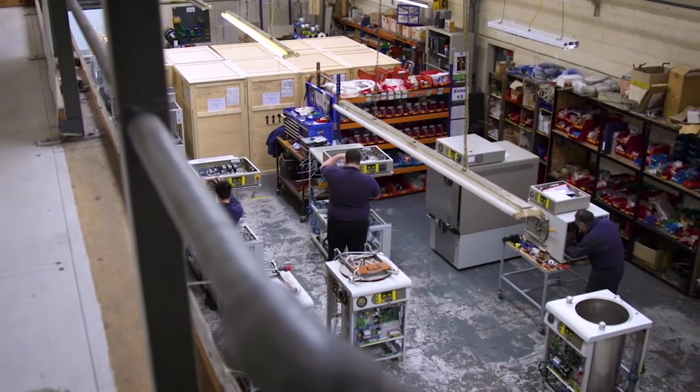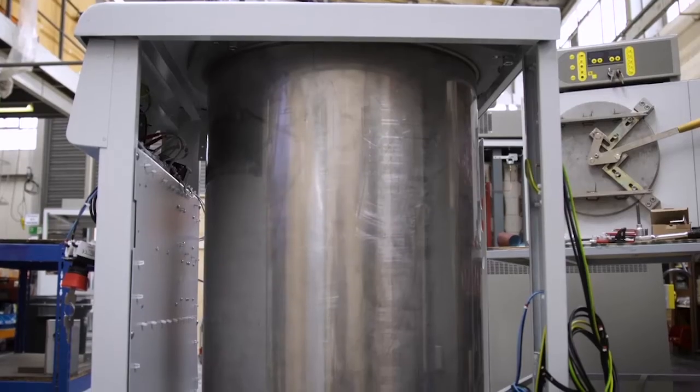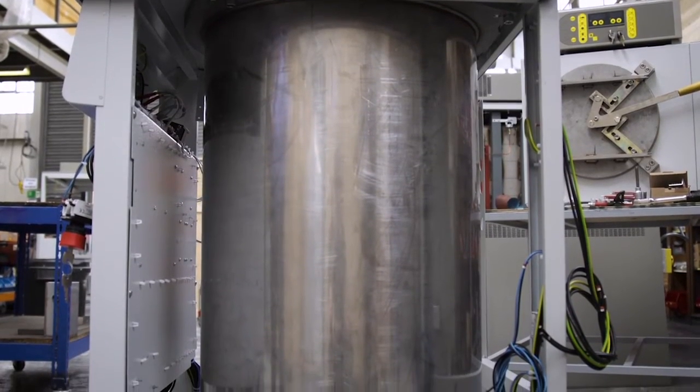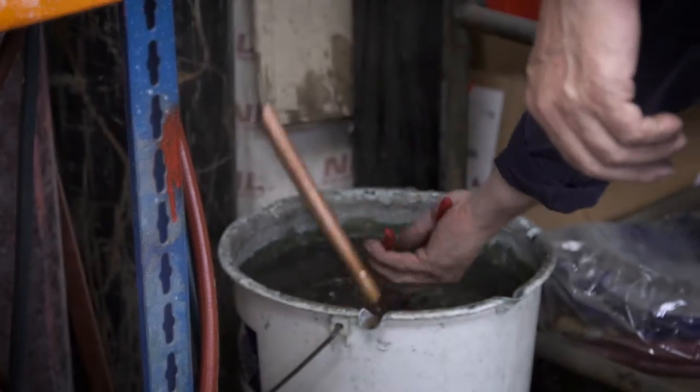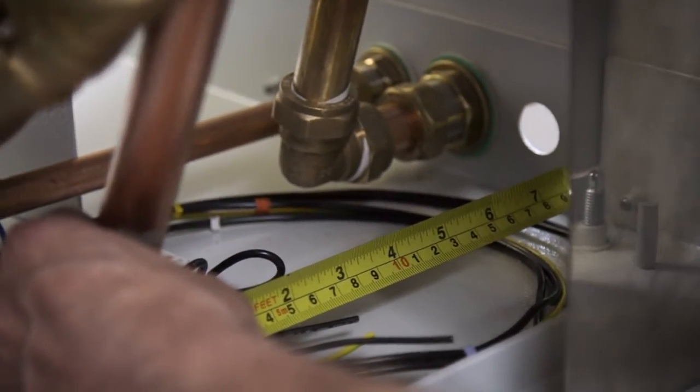All components come together in the building test area. First, the pressure vessel is carefully mounted and secured in its frame. Next, all water and steam inlet feeds and outlet drains are manually built in copper tubing and valves are fitted.